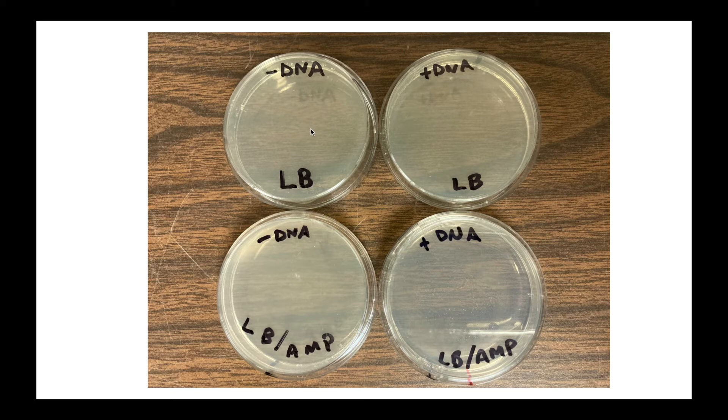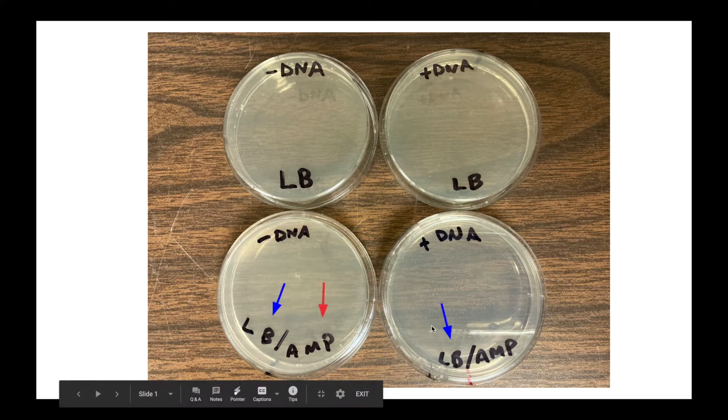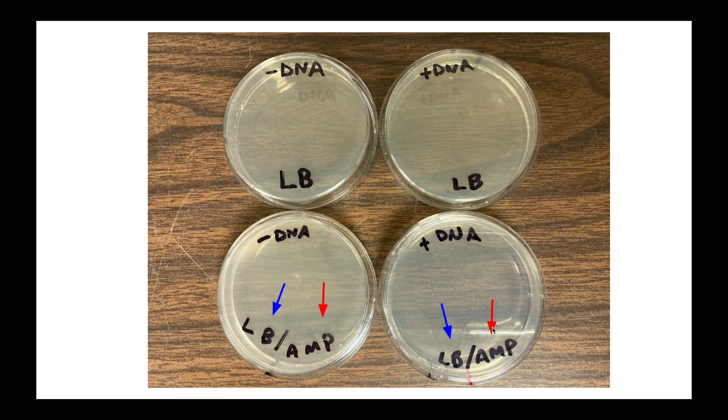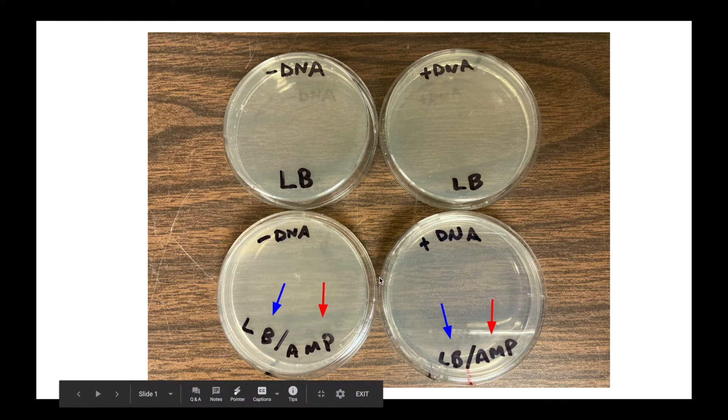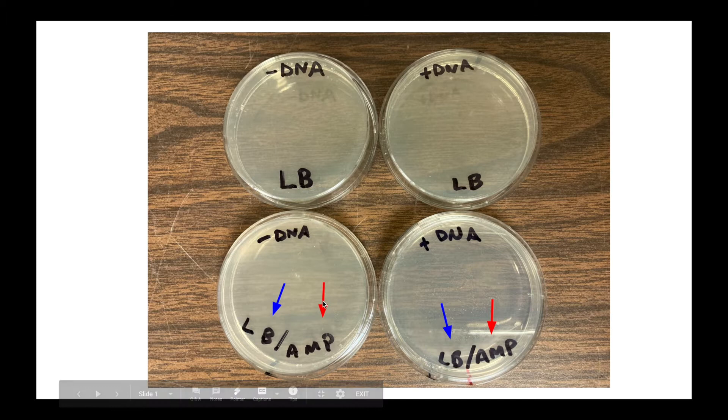So you see these two plates have something called LB in the agar. Now you might remember that LB has sugars and amino acids in it, things that the bacteria need in order to grow. These two plates on the bottom are different. They have LB, but they also have something called ampicillin that we've added to the agar. Now you may have read that ampicillin is a type of antibiotic. So when you see your results, you'll want to see what type of effect it had on the bacteria.